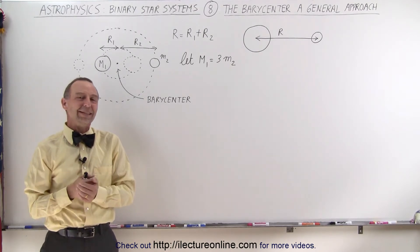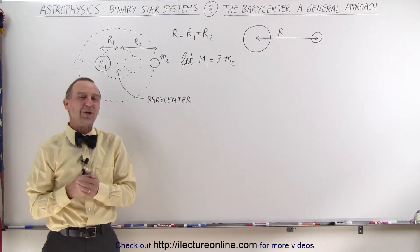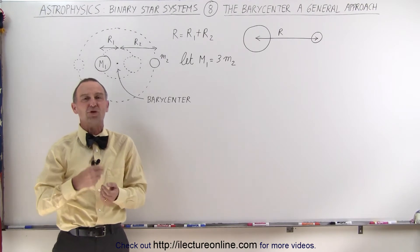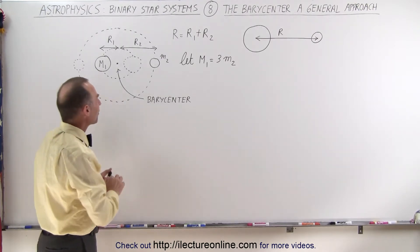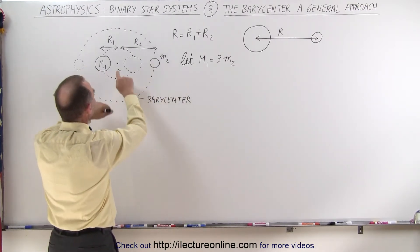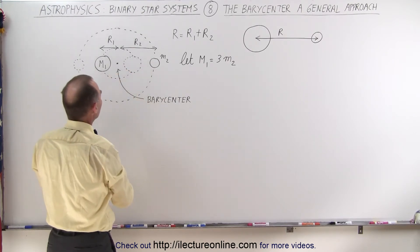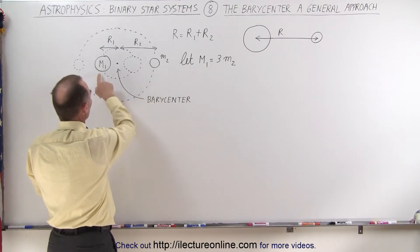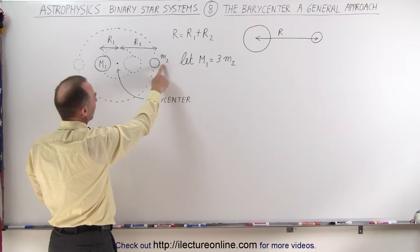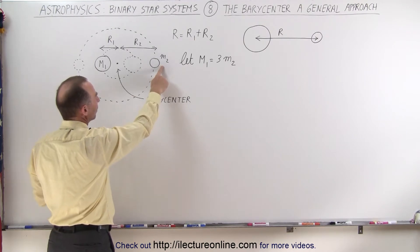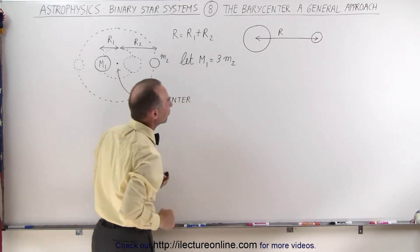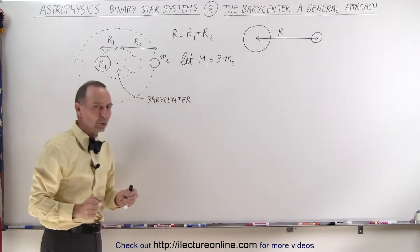Welcome to our lecture online. Now let's take a look at the barycenter in a more general approach. Let's say we have two objects orbiting around their barycenter. Object one has a mass M1 and object two has a mass M2, and let's assume that the mass M1 is three times the mass M2.